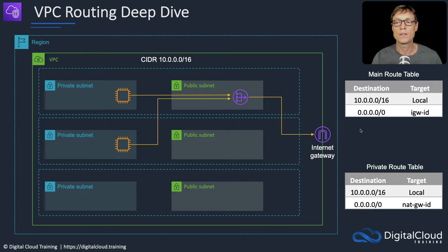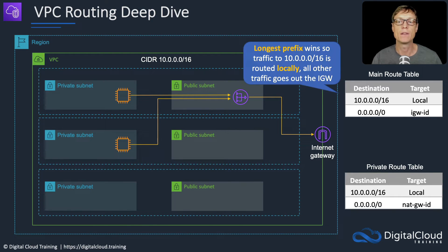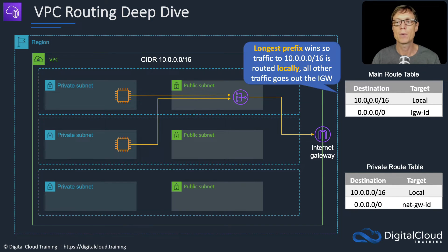The NAT gateway then in turn goes to the internet gateway. It knows to do that because the main route table is associated with the public subnets and has a route out via the internet gateway. The longest prefix always wins. Traffic to the 10.0.0.0/16 network is routed locally, and all other traffic goes via the internet gateway. So if you have multiple entries in your route table, the one with the longest prefix wins — /16 is longer than /0, and /32, which indicates a specific IP address, would also win out.